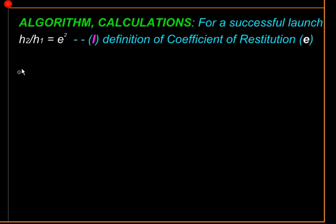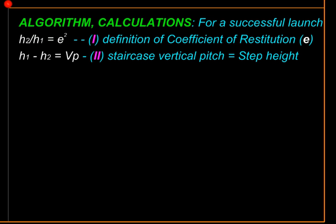Then we can write equations that relate the heights involved in a controlled fall. See, in a controlled fall, every bounce is identical to the previous one. And therefore, these heights h1 and h2 bear a precise relation with each other. The first of these relations is this, that their ratio is the square of coefficient of restitution. And the second is the difference of these heights is exactly equal to the step height or the vertical pitch of the staircase.